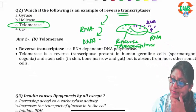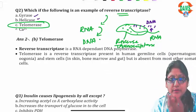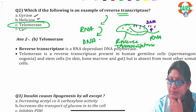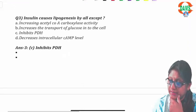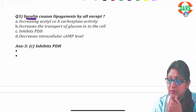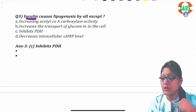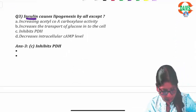So telomerase is the answer. Gyrase and helicase have nothing to do with reverse transcription, and calcium ion is of course not an enzyme. The next question: insulin causes lipogenesis by all except — to solve this, you must know the role of insulin.